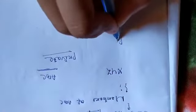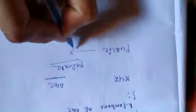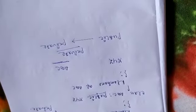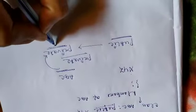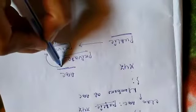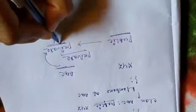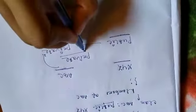When ABC privately inherits XYZ, all the public data members of XYZ become private to ABC. The public members of the base class can only be accessed by the member functions of the derived class. These private members cannot be accessed by objects of ABC, because they have become private.